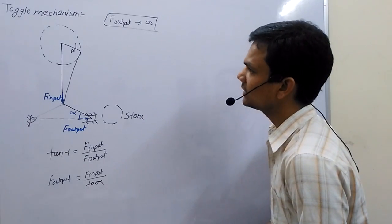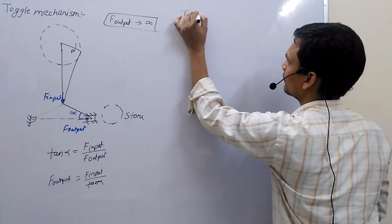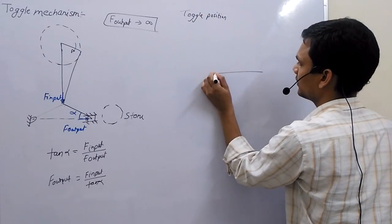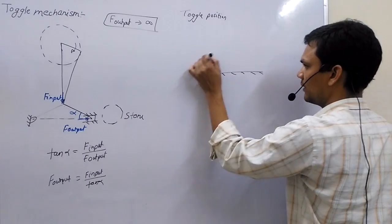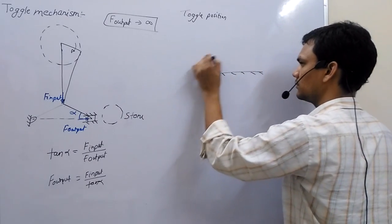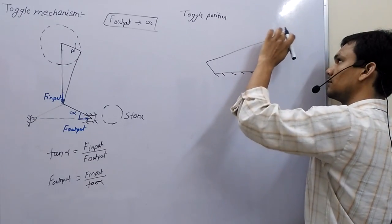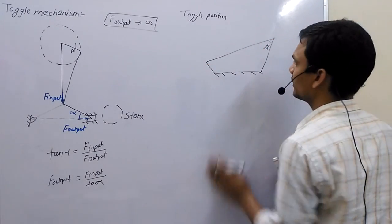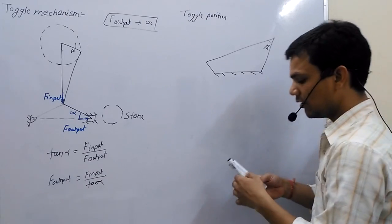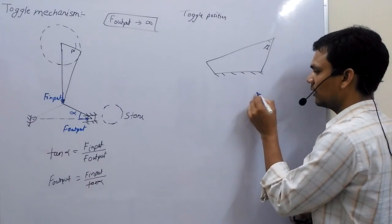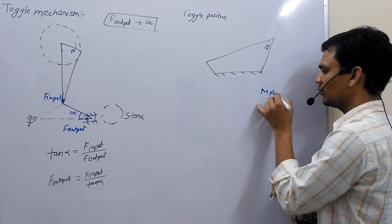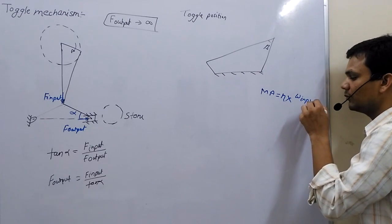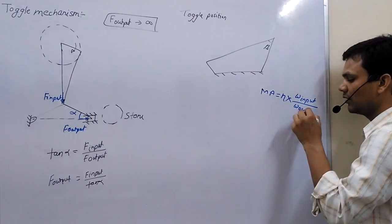Now, if we discuss Toggle Position: in a four-bar mechanism, Toggle Mechanism is applied. In my last lecture, I described the formula for mechanical advantage, which is equal to efficiency multiplied by omega at input upon omega at output.